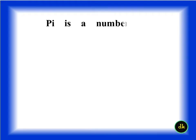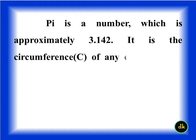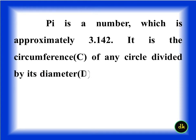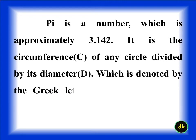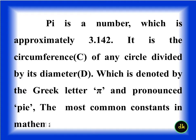What is Pi? Pi is a number which is approximately 3.142. It is the circumference of any circle divided by its diameter, which is denoted by the Greek letter Pi and pronounced Pi, the most common constant in mathematics.